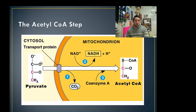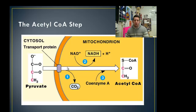Pyruvate was made out here in the cytosol by glycolysis, and here it comes in — now we're in the matrix. As we enter in, it's going to be decarboxylated — in other words, it's going to lose a carbon. CO2 is released. When you exhale CO2, this is the source of that CO2. It's going to be decarboxylated, ripped off of the pyruvate — essentially a waste product. Energy is released, and we use that energy to reduce NAD to make NADH, which carries energy to the electron transport chain, because that's going to make the most of our ATP.